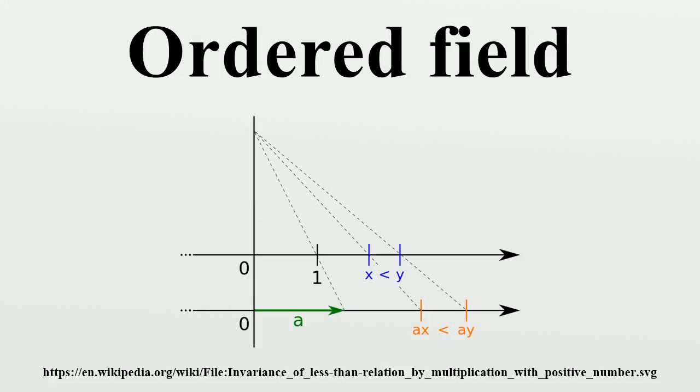In mathematics, an ordered field is a field together with a total ordering of its elements that is compatible with the field operations.